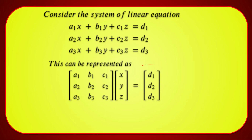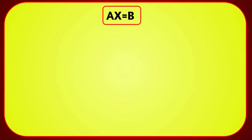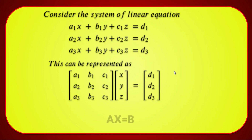This can be written as the matrix equation AX = B, where A is the coefficient matrix, X is the variable column matrix, and B is the constant column matrix.